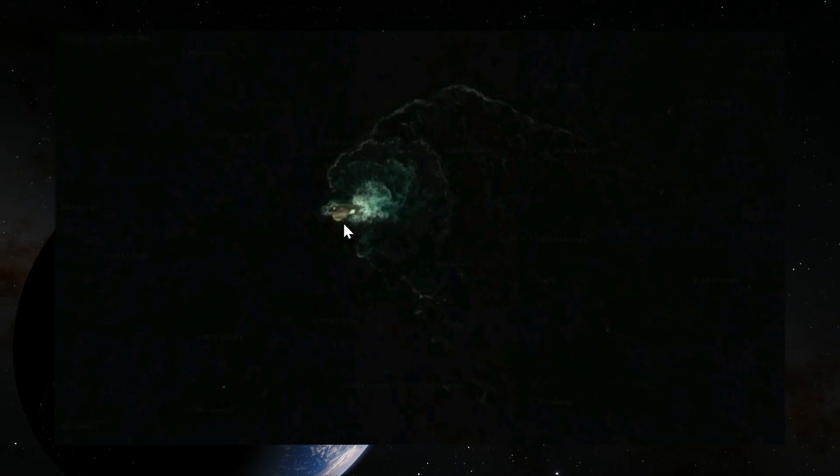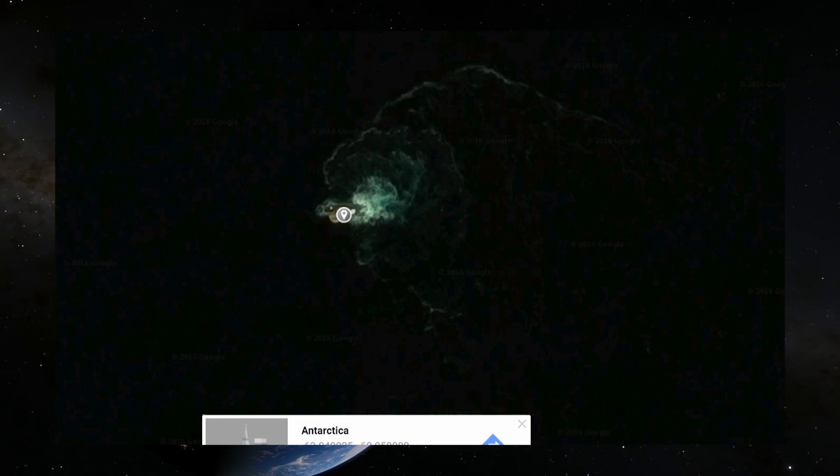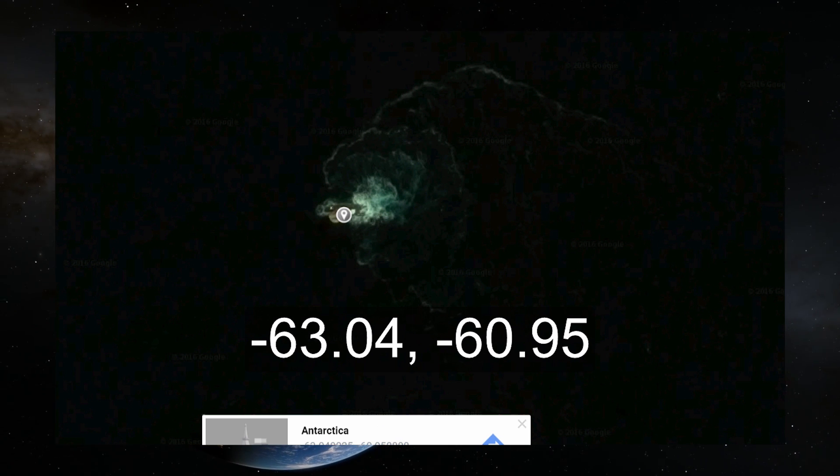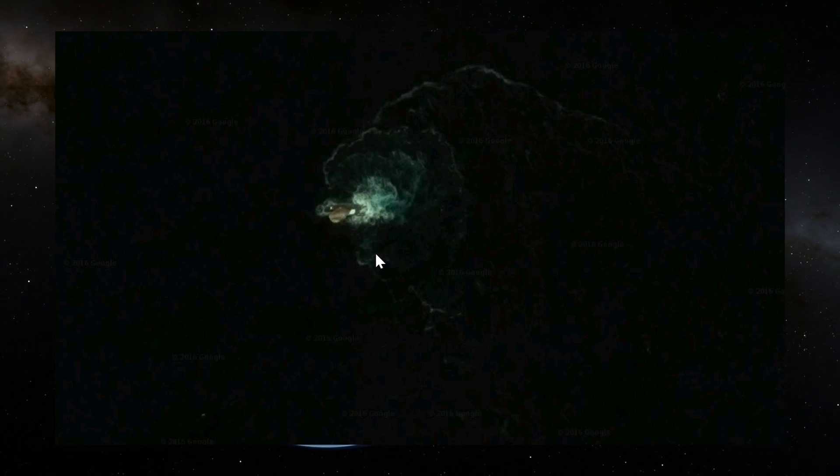But it is a mysterious shape and it would be really nice to find out what this actually is. Maybe someone one day can actually visit this spot. The coordinates for it are right here: minus 63.04 and minus 60.95. If you do visit, let us know what this is and post it in the comments below.